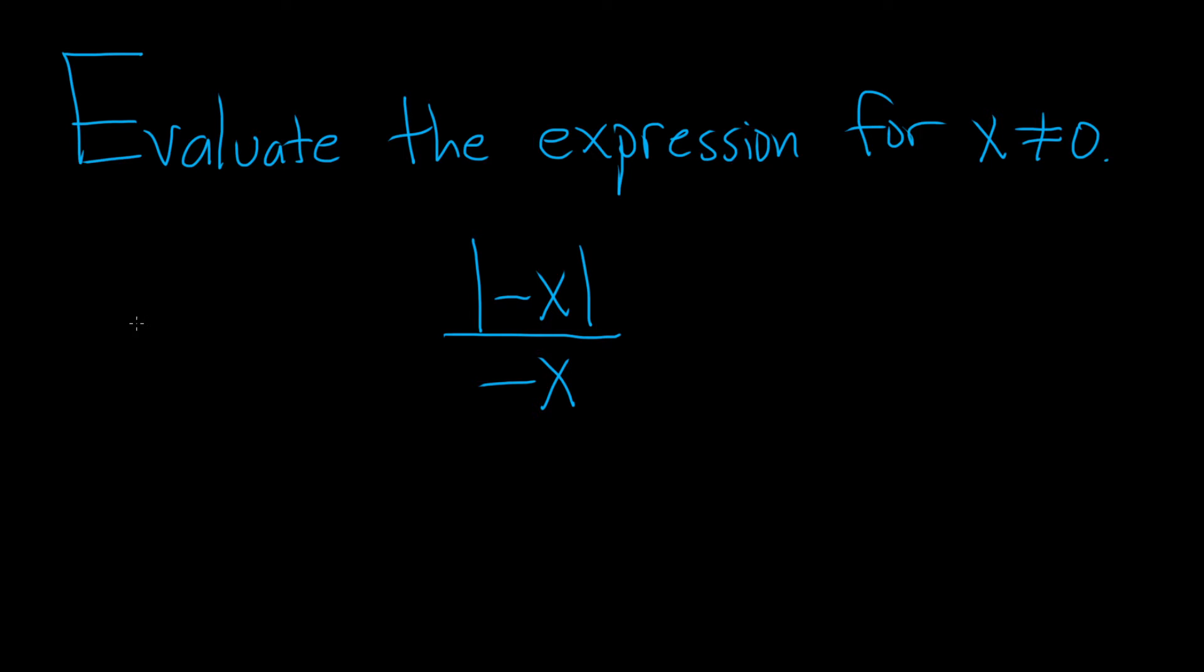So the first thing we can do is rewrite the numerator as follows. Whenever you have the absolute value of negative x, that's the same thing as the absolute value of x. So you can just drop the negative sign inside the absolute value and we still have the negative x on the bottom.